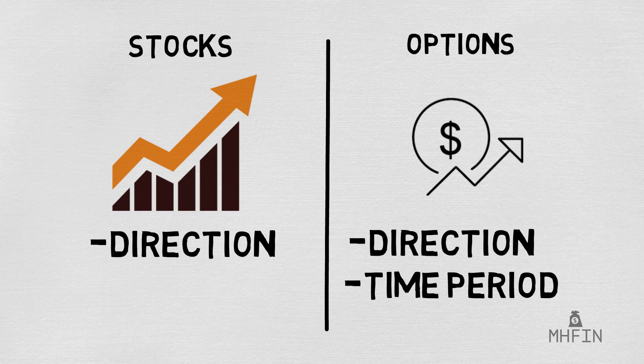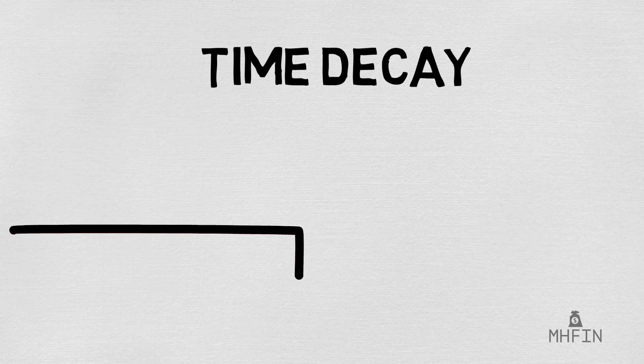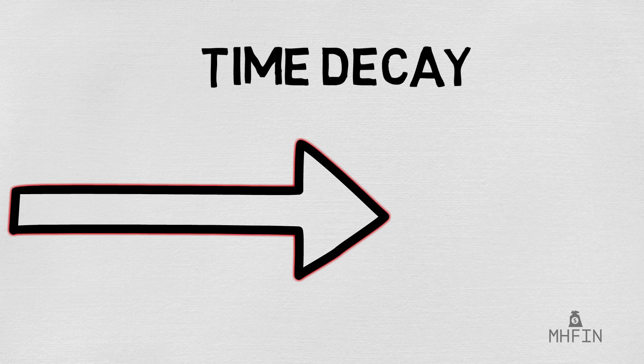This is where Theta begins to take form. Options come with time decay, which just means that as an option approaches its date of expiration, it loses its value.